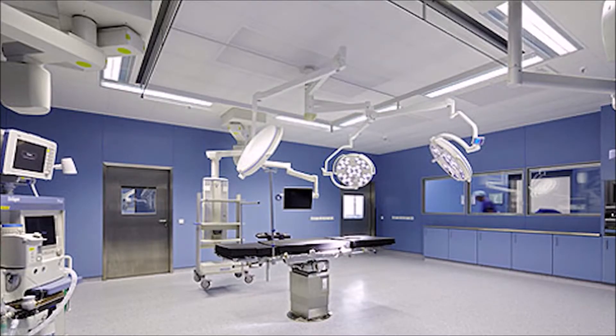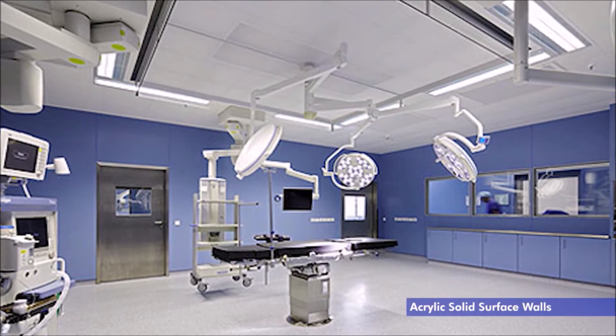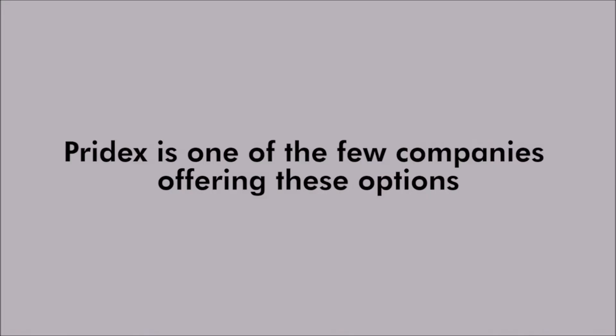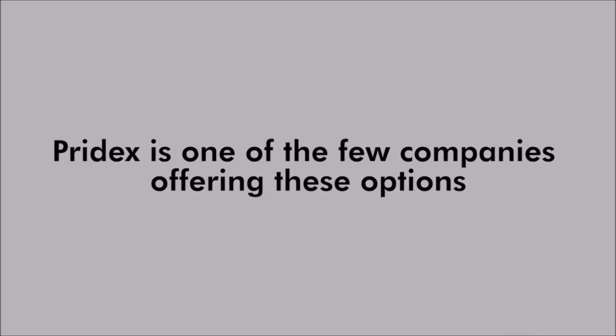Wall panels, doors, and accessories. Wall panels can be made of various materials like acrylic, solid surface, glass, stainless steel, or hybrid. Pridex is one of the few companies offering these options.